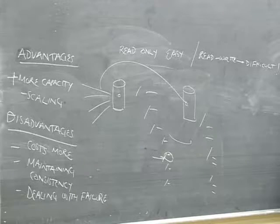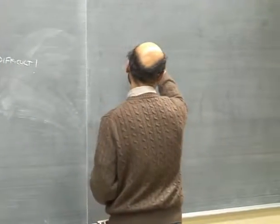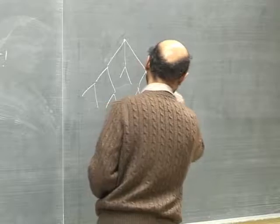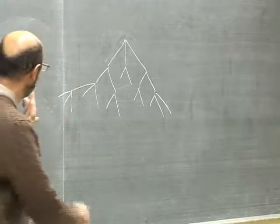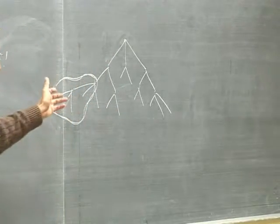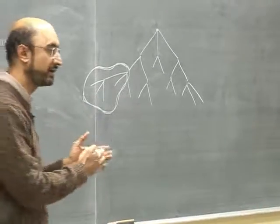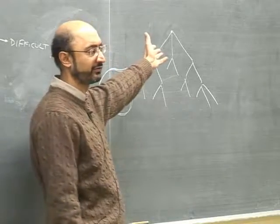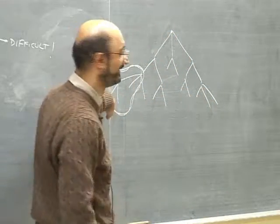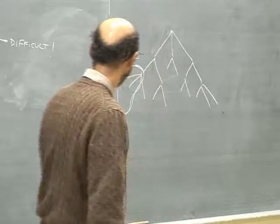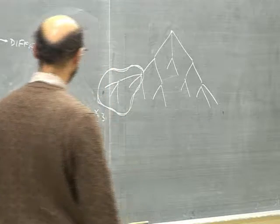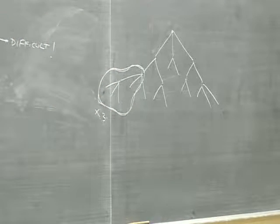They take the file system tree and assign a set of files to one disk. So one disk is responsible for one part of the tree — for example, part of the search tree from 'artwork' to 'zebras'. They replicate it three times on three different drives. So you get hierarchy plus replication.